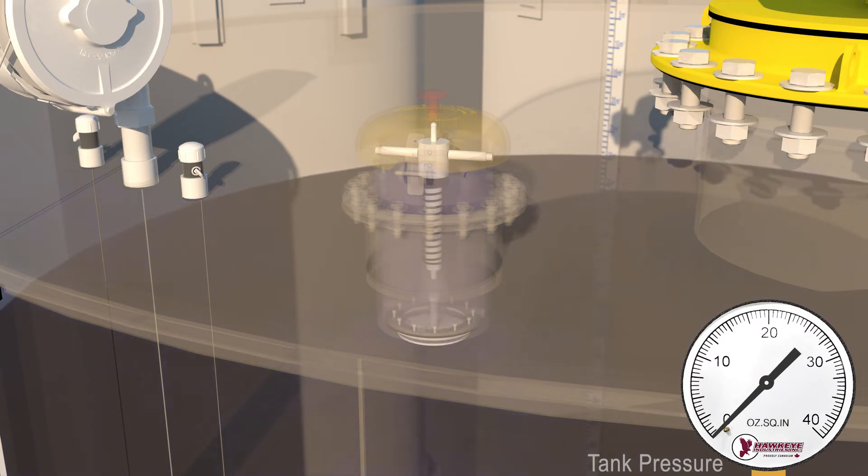As the fluid flow stops, the vacuum pallet recedes at the 0.4 ounces per square inch vacuum setting.